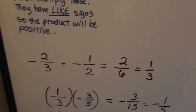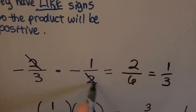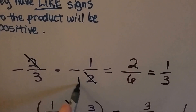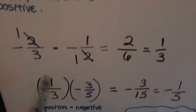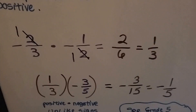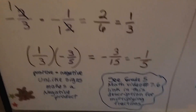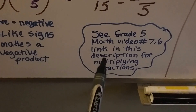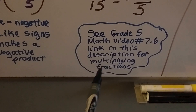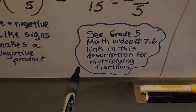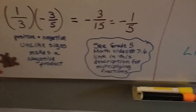We also could have canceled out: this 2 and this 2 — there's one of each — so 1 times 1 is 1, and 3 times 1 is 3, which helps us avoid having to simplify later. If you're confused about that, watch the Grade 5 Math video number 7.6 — there'll be a link in this video's description to help you review how to multiply fractions.